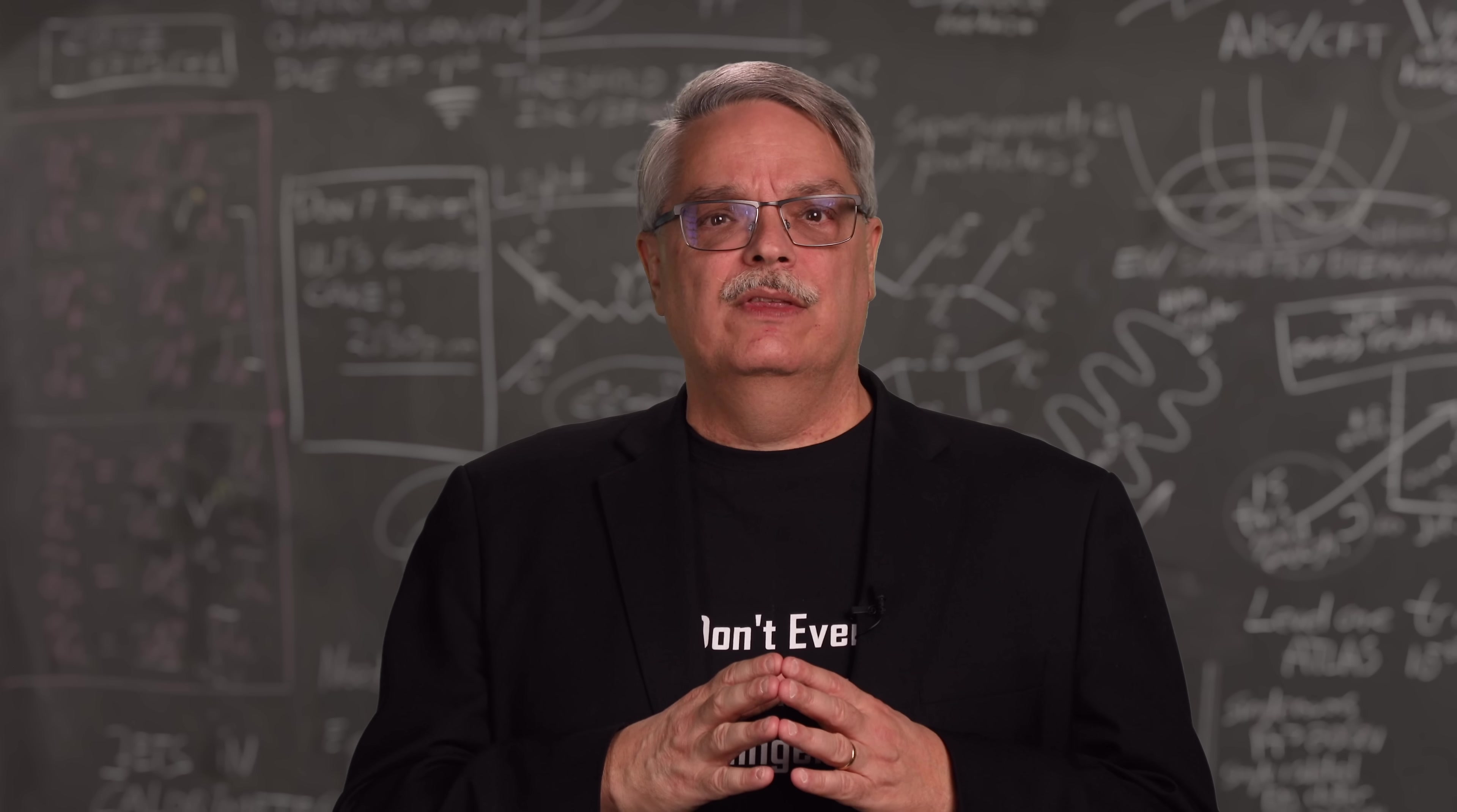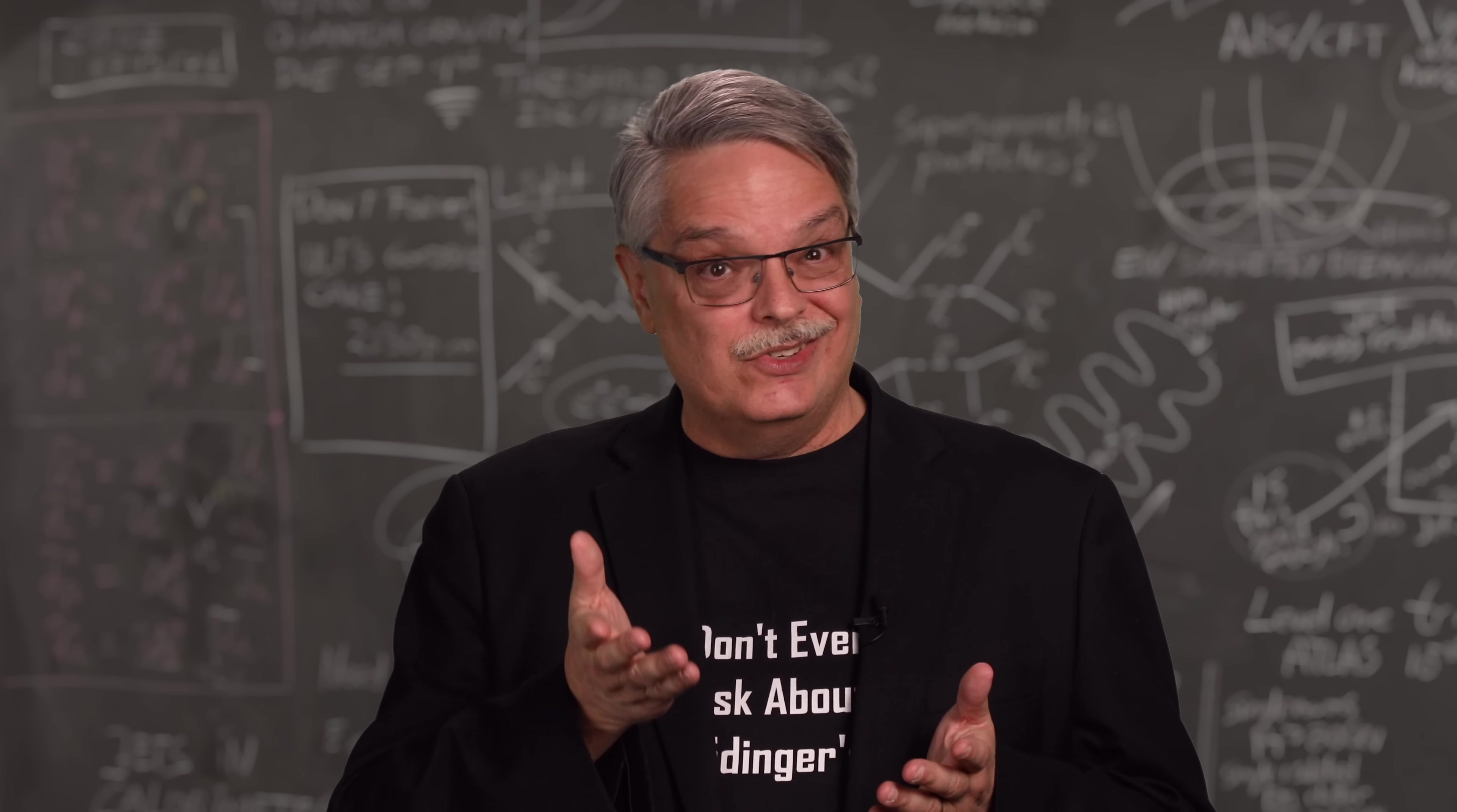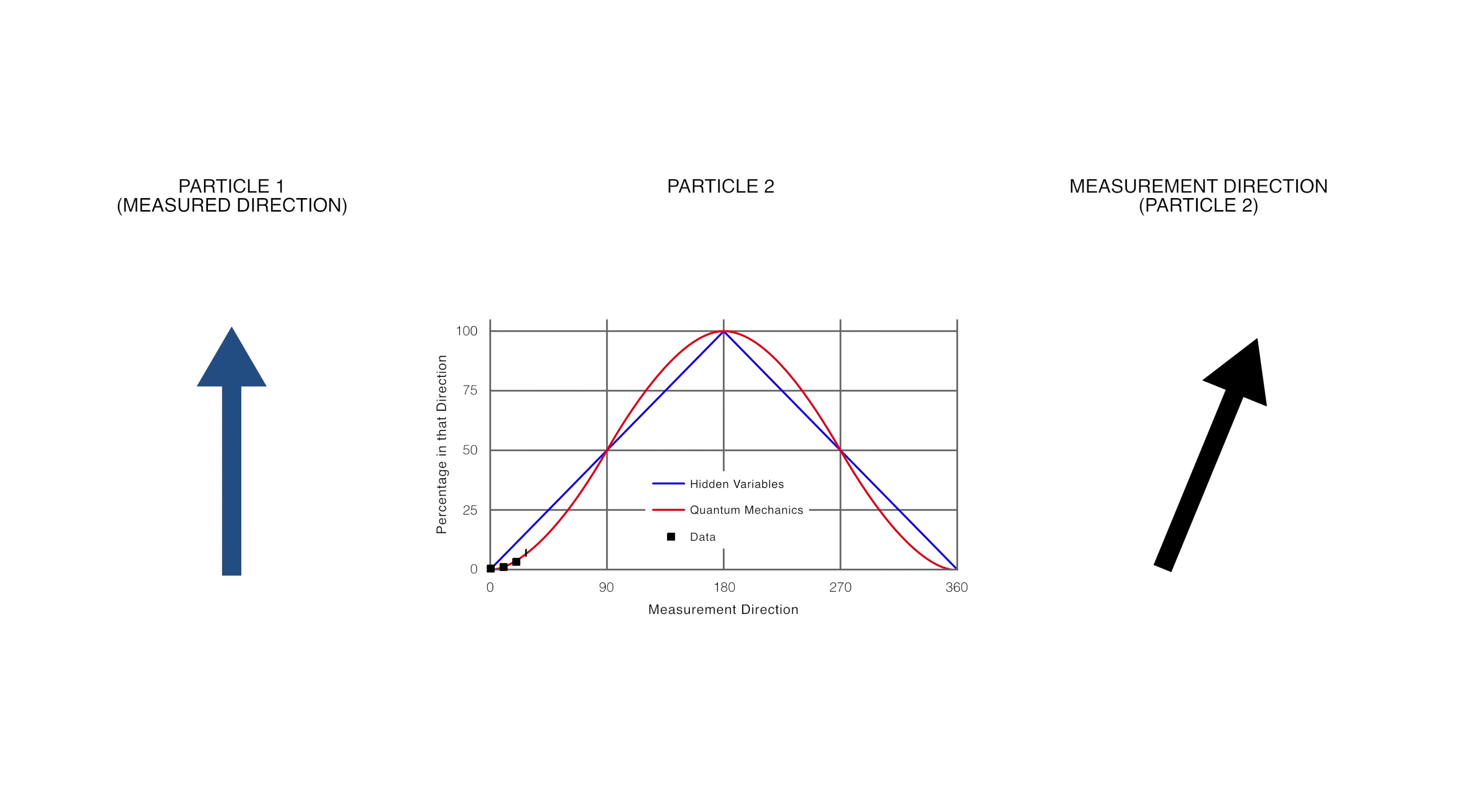It's very important that we see that the predictions from hidden variables and quantum mechanics are different. This is key. So those are predictions. What does the measurement say? Well, these black dots show the measurement and they are quite definitive. Quantum mechanics is correct and the whole idea of hidden variables is completely ruled out.